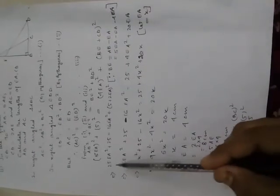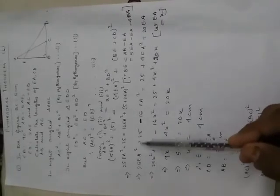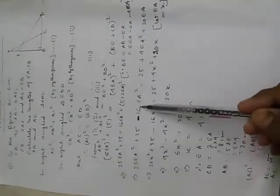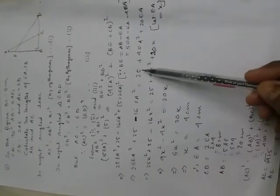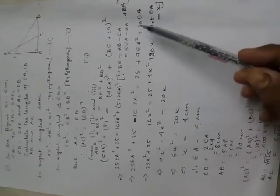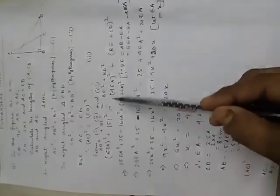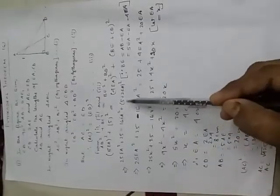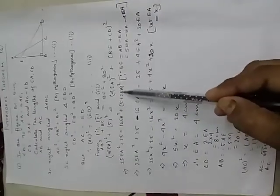Now, 25EA² plus 25 minus 16EA² equals 25 plus 4EA² plus 20EA. I have done it with the formula of (A plus B)².